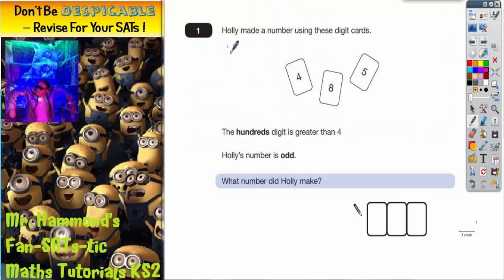Question number one says Holly made a number using these digit cards: four, eight, and five. The hundreds digit is greater than four, and Holly's number has to be odd. Okay, so that's the key information we've got.